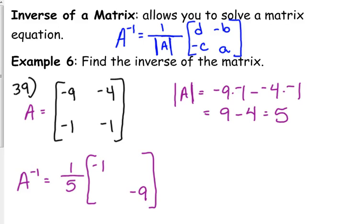So, in this case, they're already negative. So, 4 and negative 1, negative 4 and negative 1 become positive 4 and positive 1. And our last step is we need to multiply by that scalar multiple. Okay, multiply everything by the 1 fifth.